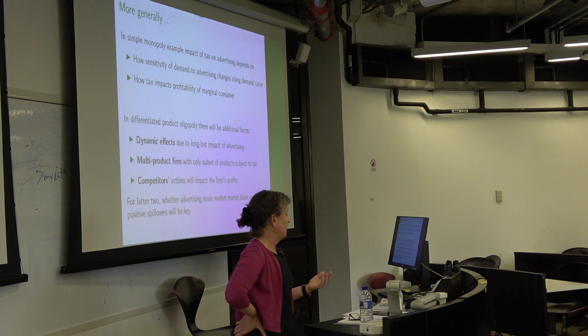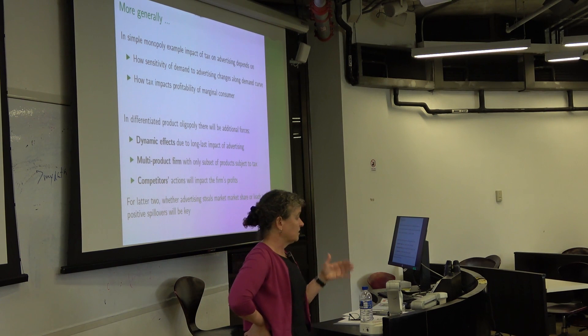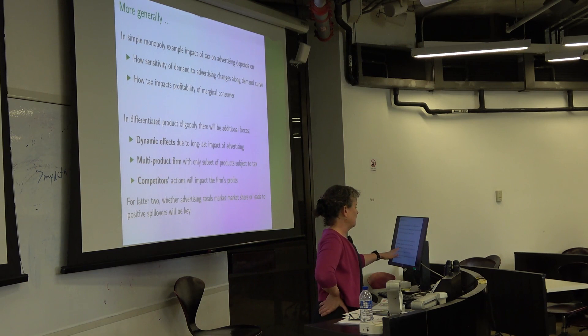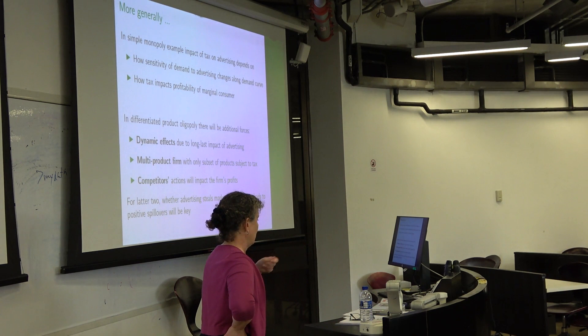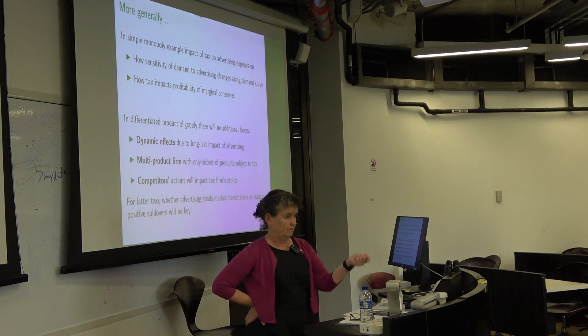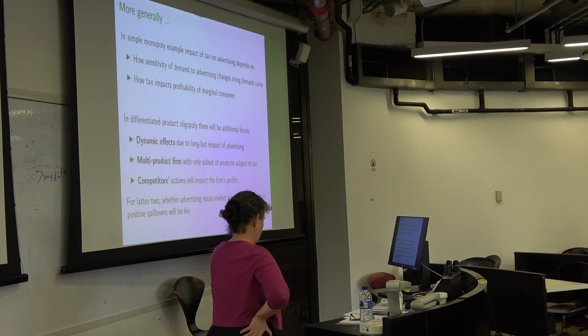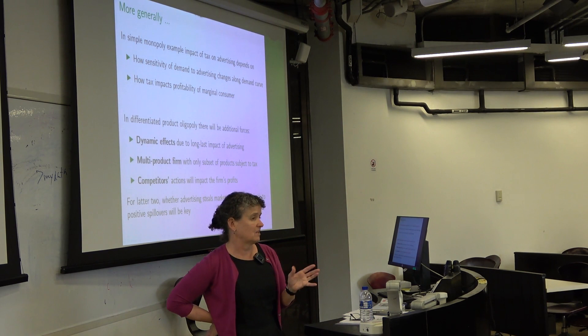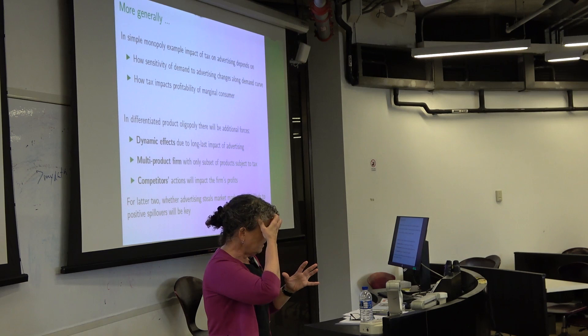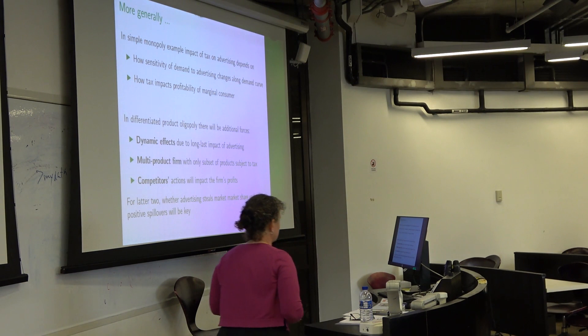In the differentiated product market, other forces will also be at play: dynamic effects from advertising's long-lasting impact, multi-product firms creating spillovers — advertising Diet Coke may affect Coke demand — and competitors' reactions, so if Pepsi does something, Coke responds. It gets insanely messy when you try to solve the full model, and it's hard to get intuition in oligopoly models for what's actually happening. So we start from a really simple model, understand the forces, then add complexity and examine how those forces are affected.